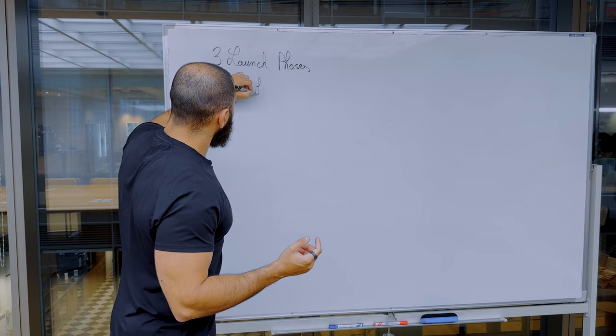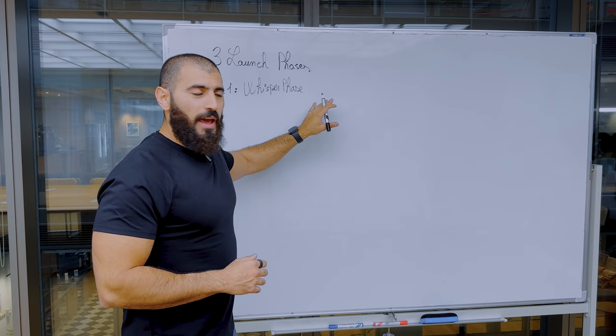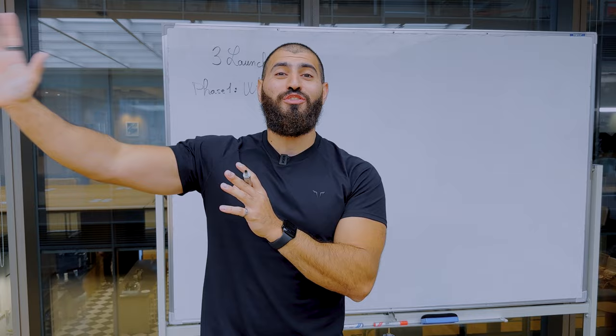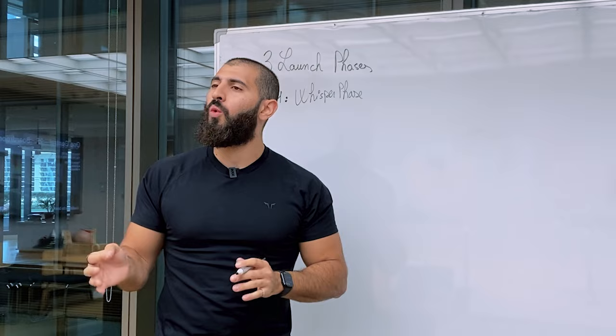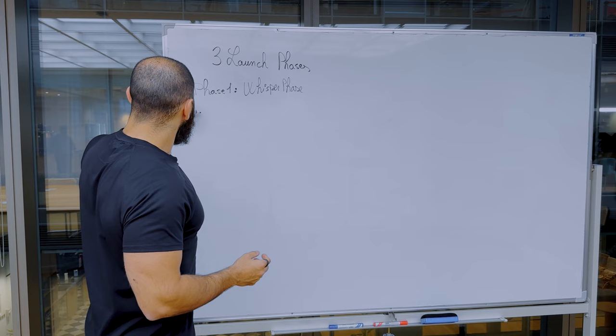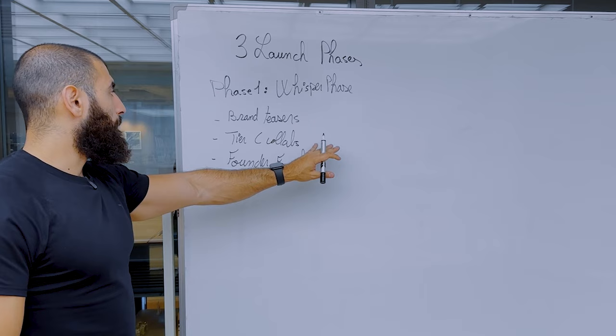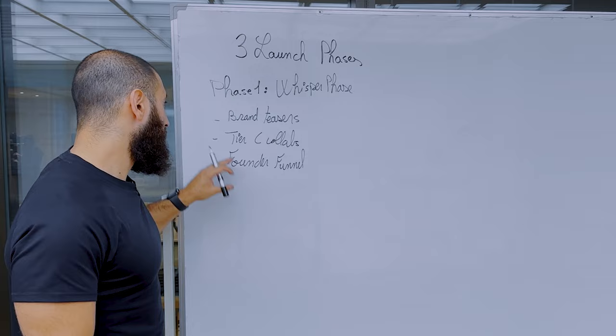Phase one of launching an NFT project is the Whisper phase. Whisper typically lasts anywhere between six to 54 weeks — we've seen projects do it in six weeks and all the way up to over a year. There are three main activities during phase one: brand teasers, Tier C collaborations, and the founder funnel.